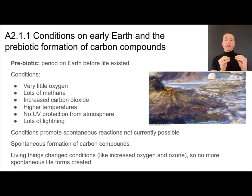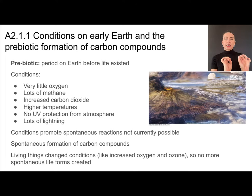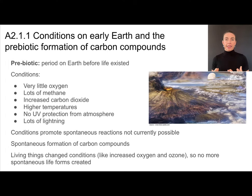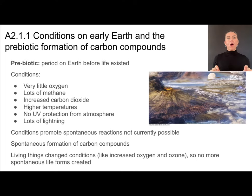Once living things arose, they started to change earth's environment. They started producing things like oxygen and we started getting an ozone layer. So those conditions, which were perfect for the spontaneous generation of these complex compounds, no longer exist. We don't see any more spontaneous generation of those compounds, but I do want to travel back and talk about how that might have first happened.